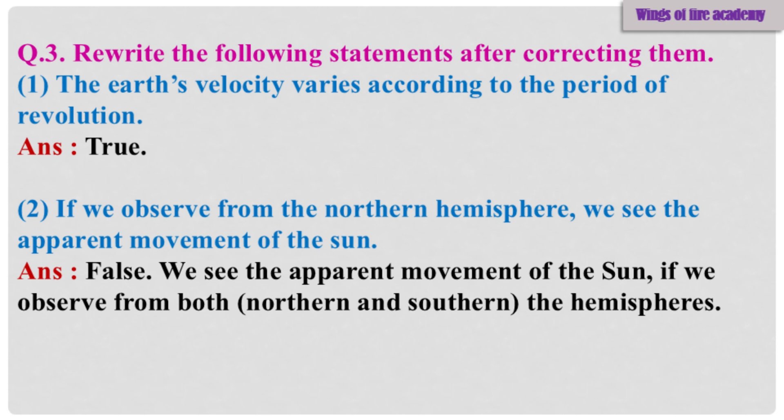Question 3: Rewrite the following statements after correcting them. Sub-Question 1: The Earth's velocity varies according to the period of revolution. Answer: True. Sub-Question 2: If we observe from the Northern Hemisphere, we see the apparent movement of the Sun. Answer: False. We see the apparent movement of the Sun if we observe from both the Northern and Southern Hemispheres.